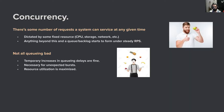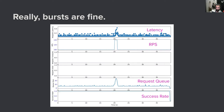Not all queuing is bad. Temporary increases in queuing delays are totally okay — this happens in real life all the time with unexpected bursts, and we recover from them. In a simulation where I bumped up the RPS to the same level but then quickly dropped it back down to normal, the request queue begins to form but then, as the RPS returns to normal, the queue burns down, latencies return to normal, and the success rate was unaffected.